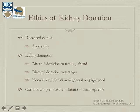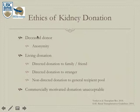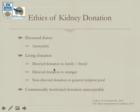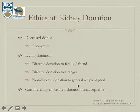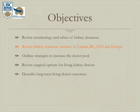For deceased donation, the process is currently anonymous — donor families won't know who receives the kidney, and vice versa. Society has deemed that directing donations based on religious or racial values is not appropriate; allocation is managed centrally. For living donation, directed donation to a known or stranger recipient is allowed. Non-directed altruistic donors can also contribute. Commercially motivated donation is considered unacceptable in our society, as it exploits vulnerable populations.